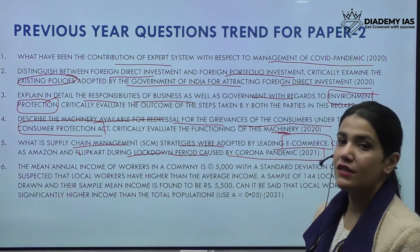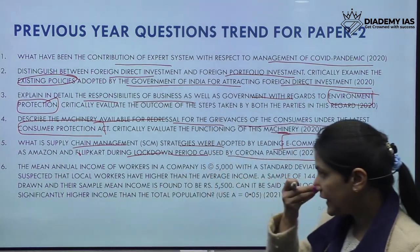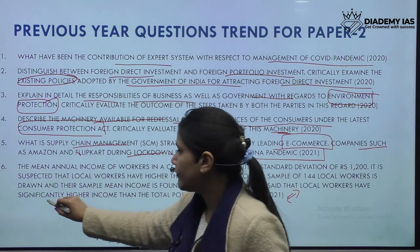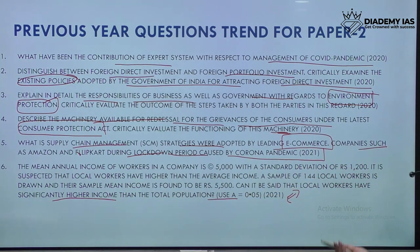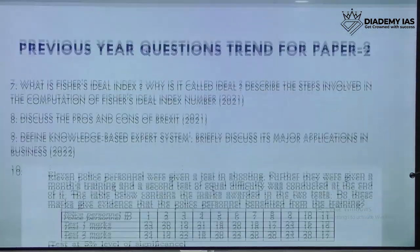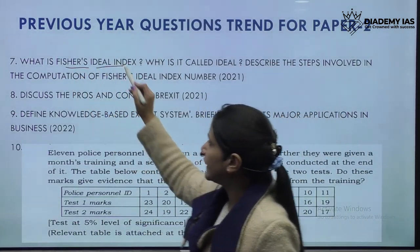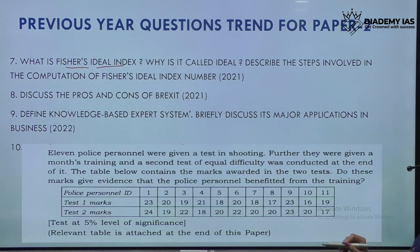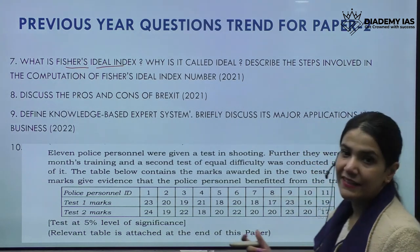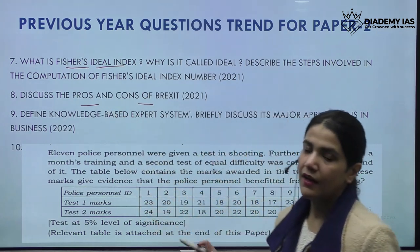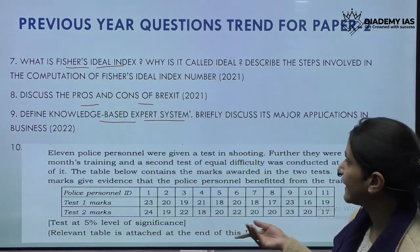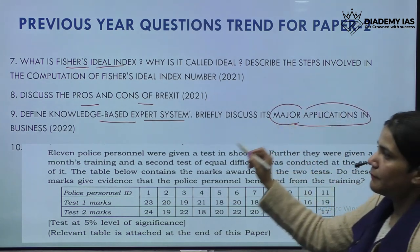Question six is a practical numerical where they ask you to identify trends of mean annual income of workers using a formula — a direct numerical question after studying the topic. Question seven asks about Fisher's ideal index, why it is called ideal, and the steps involved in its computation — once understood factually, you can easily attempt this. For Brexit, which was very prominent in 2021, they asked about the pros and cons of the exit of Britain from the European Union. Another question asked to define knowledge with expert systems and the major applications in the context of business.